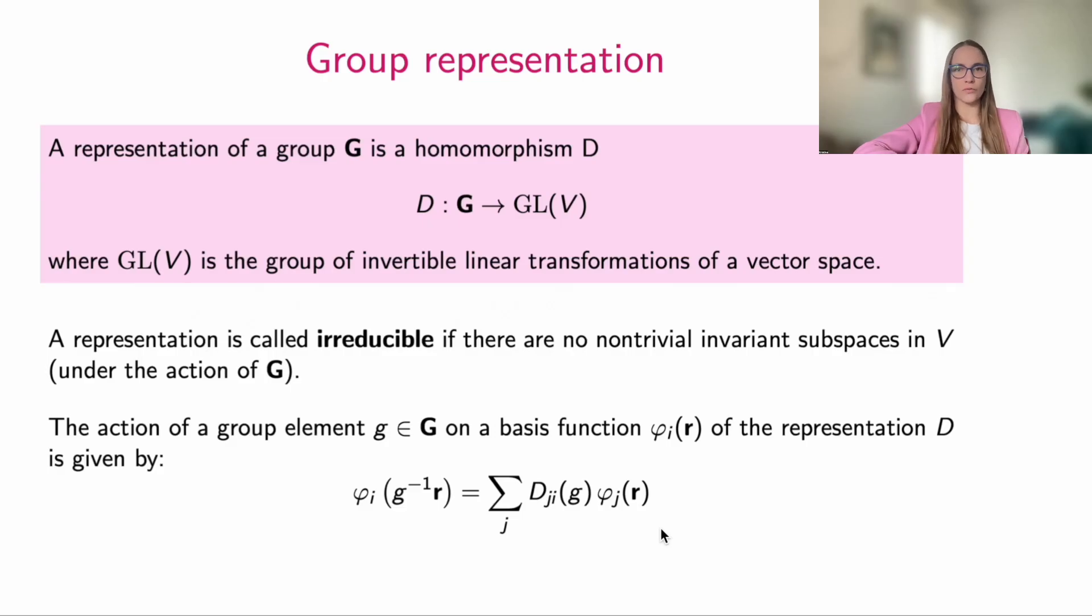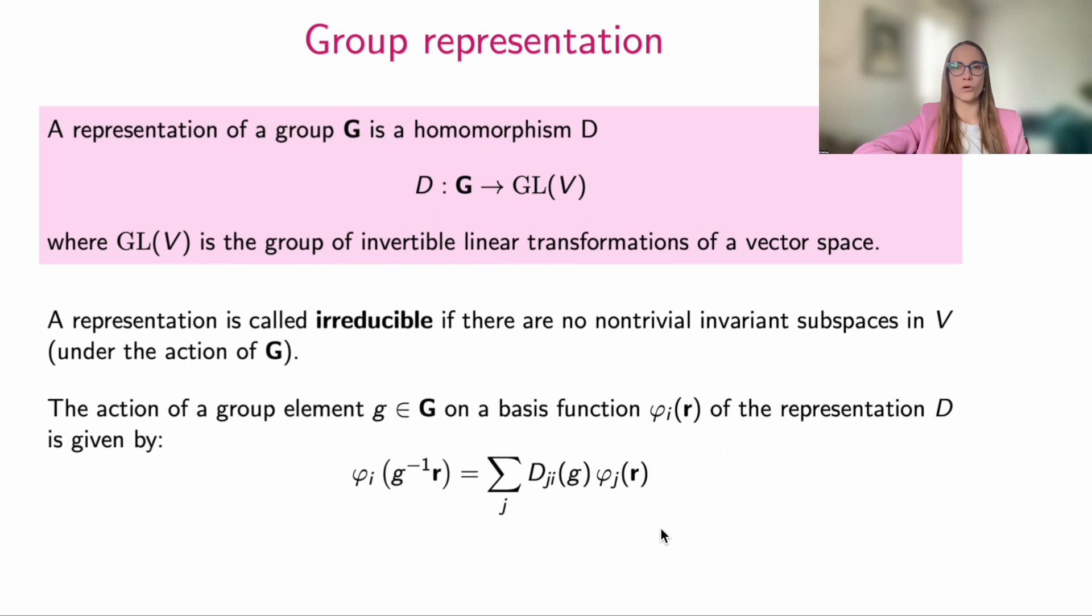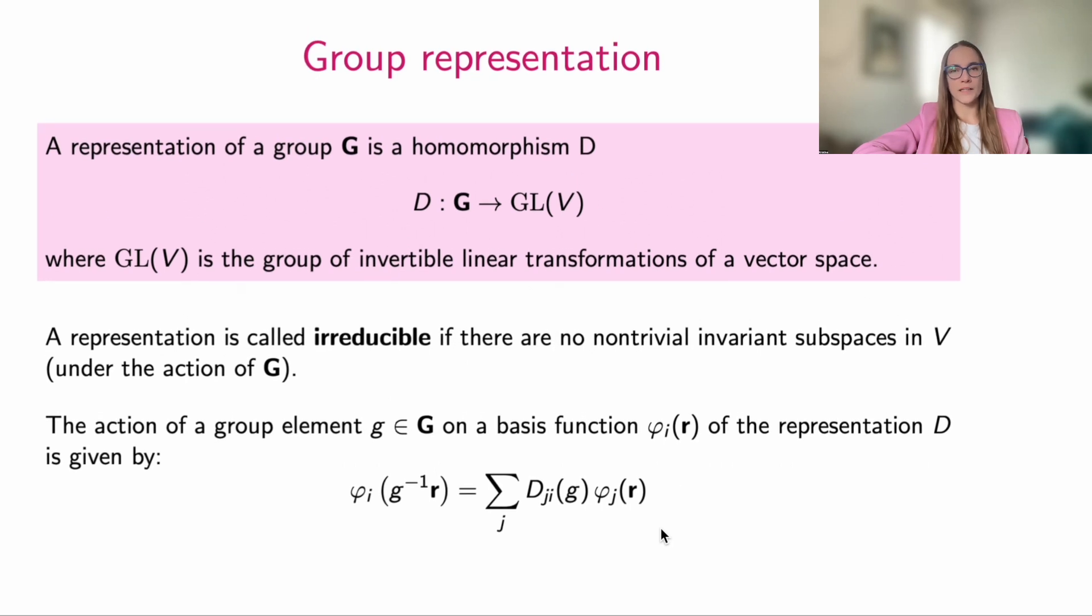A stricter definition of a group representation goes as follows. A representation of a group G is a homomorphism D from our group into the group of invertible linear transformations of a vector space V. Invertible linear transformations can be represented by matrices, and the homomorphism condition means that they respect the group multiplication structure, namely fit the multiplication table.